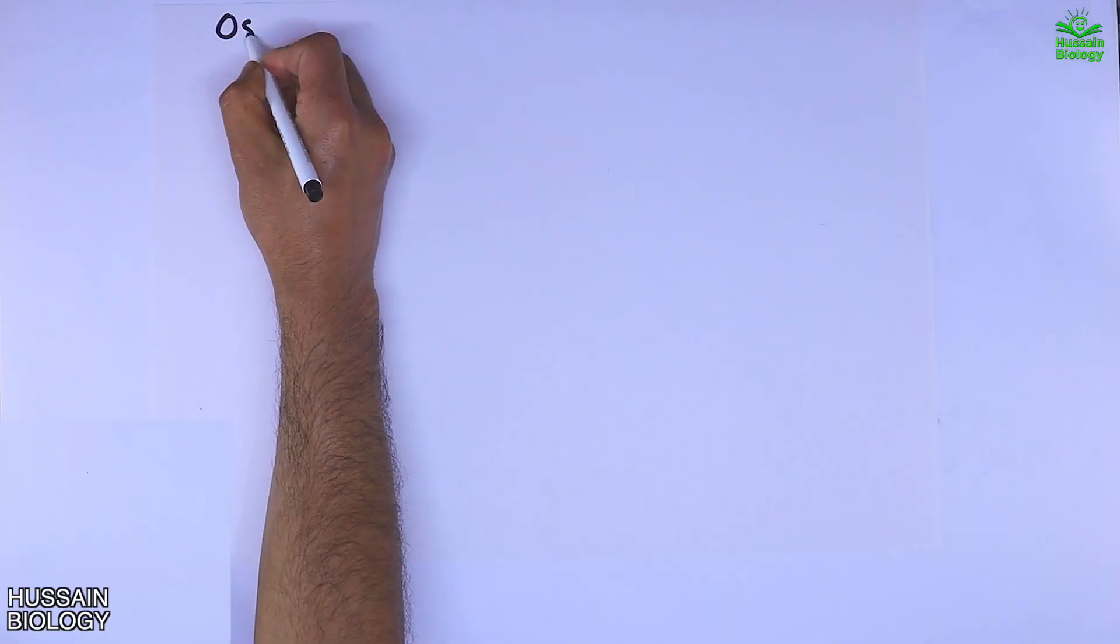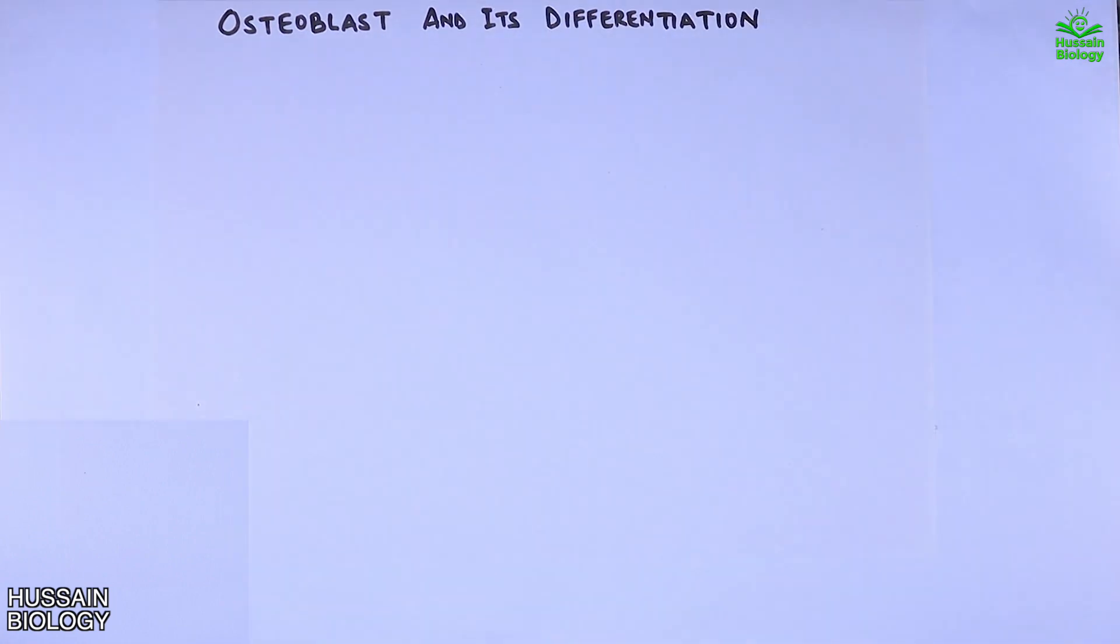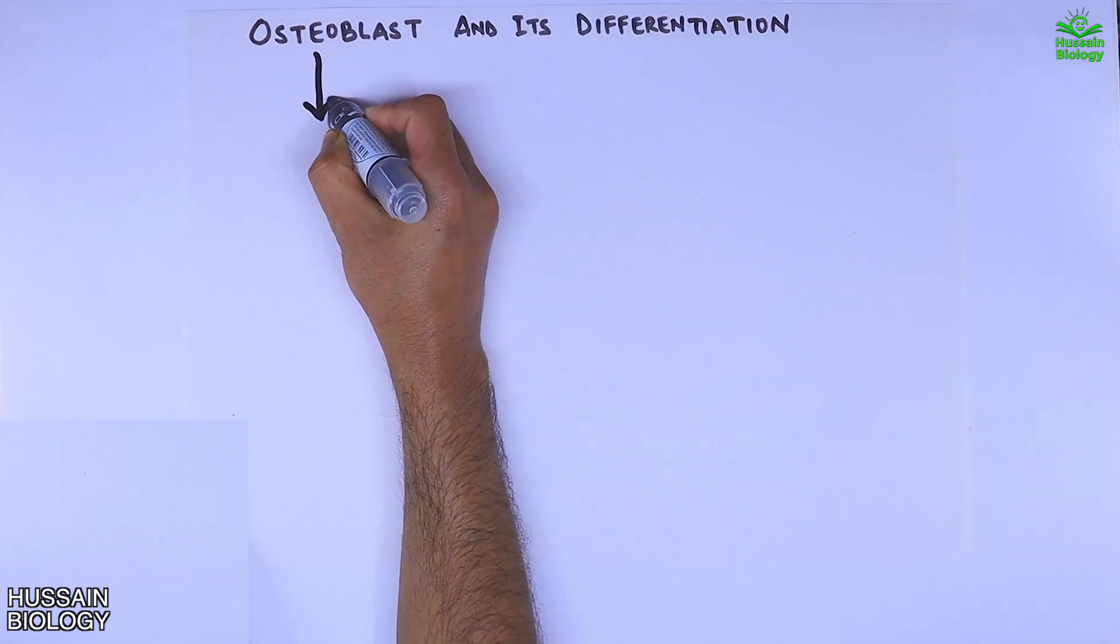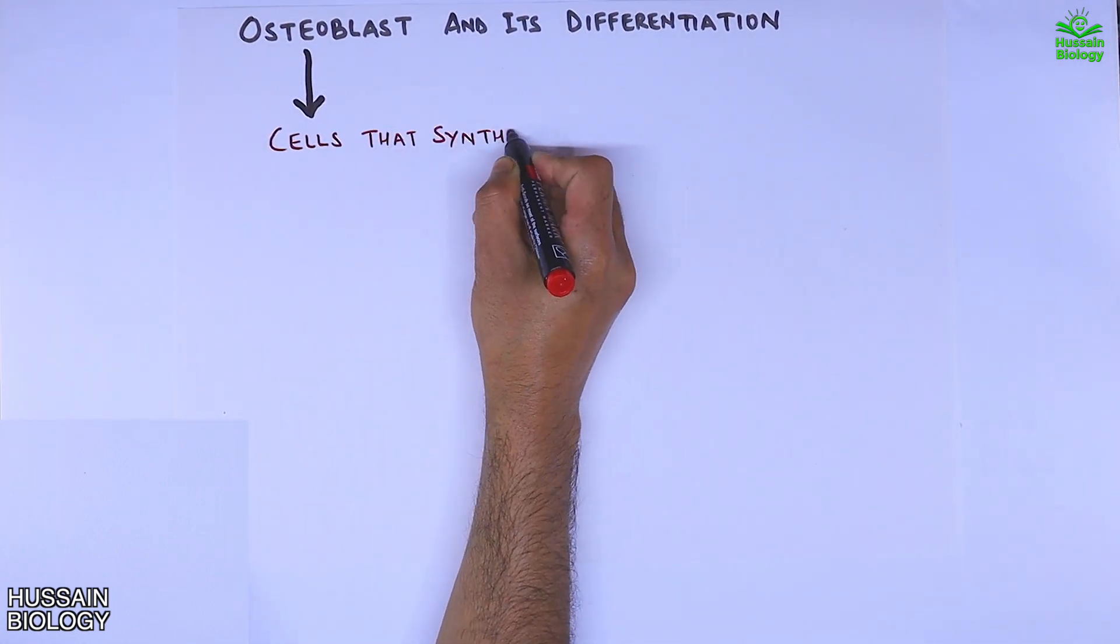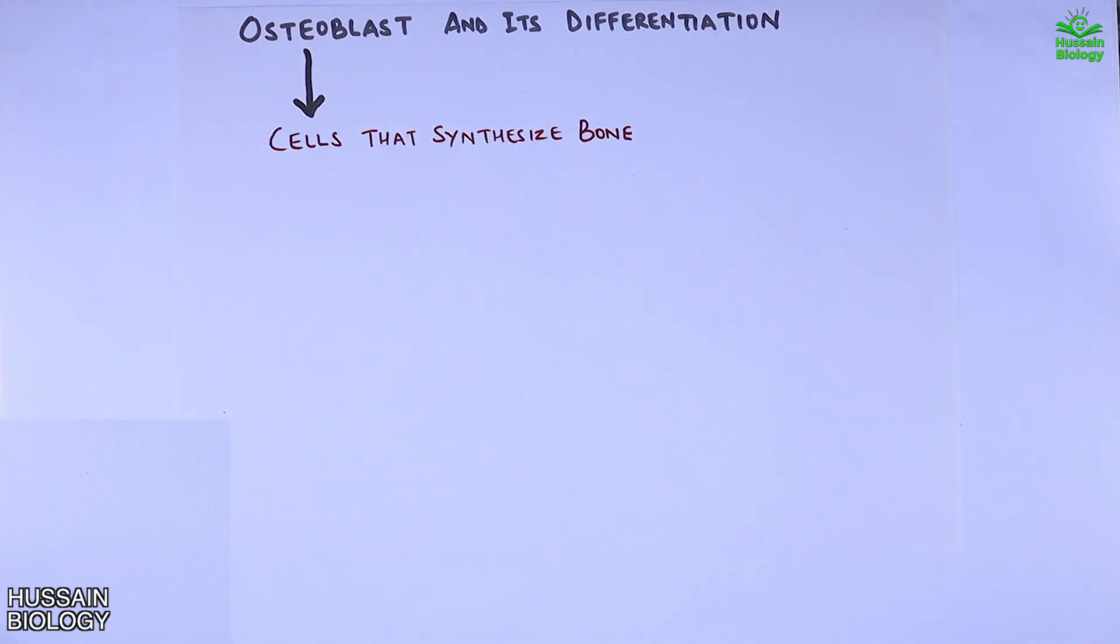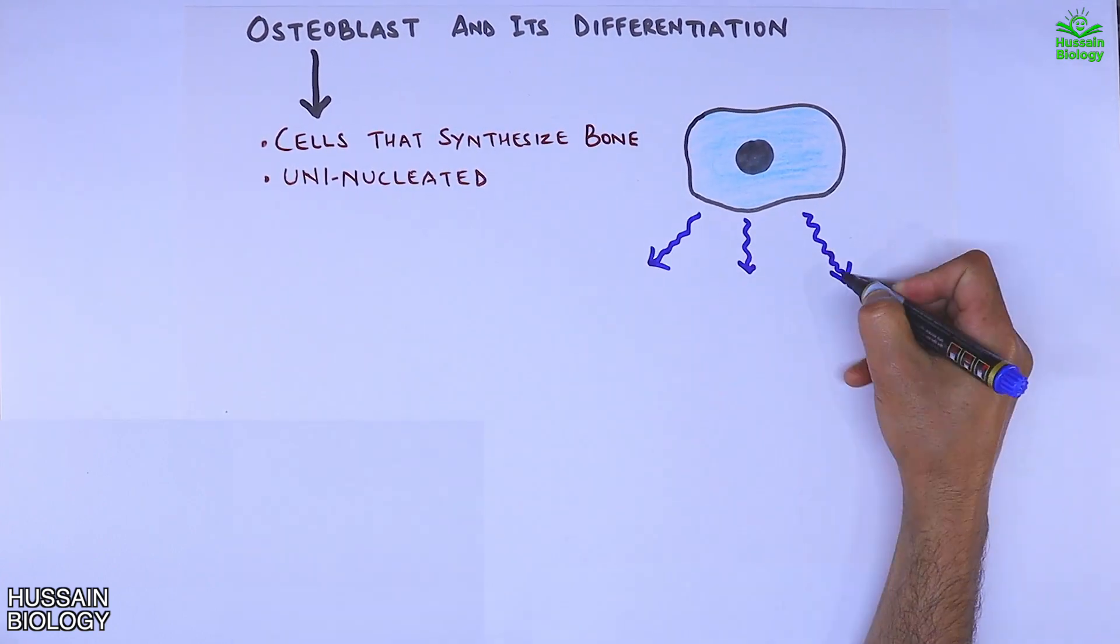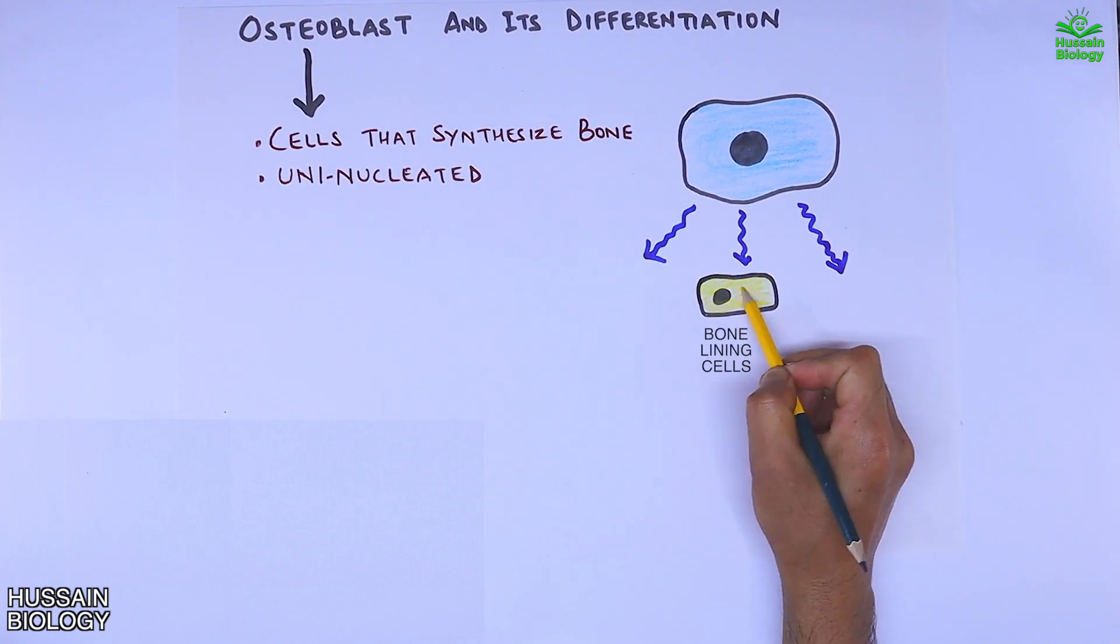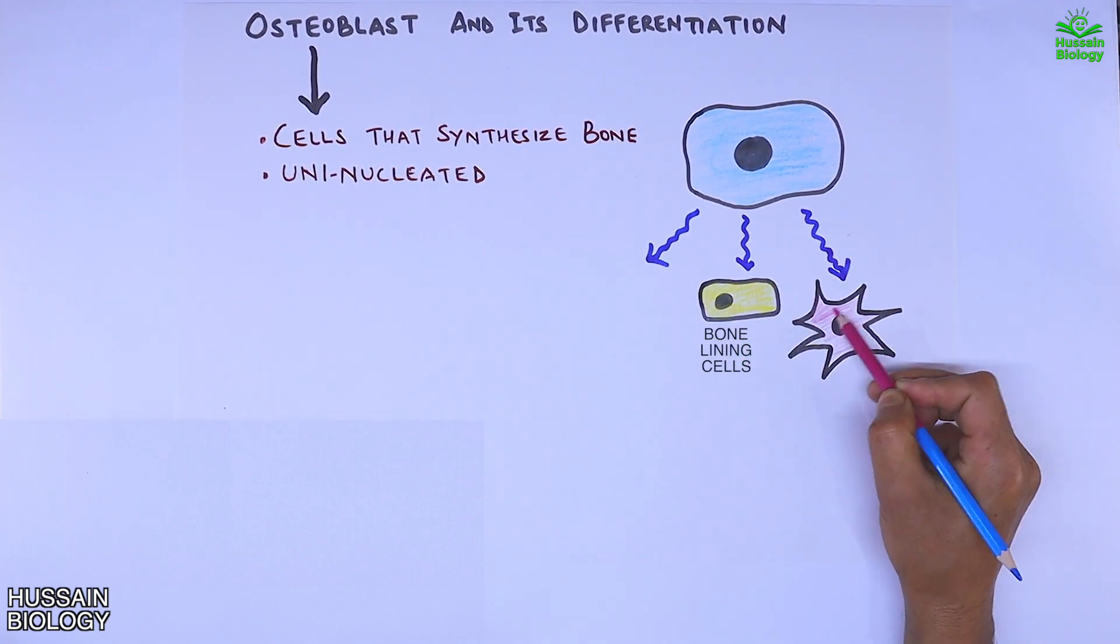In this video we'll be discussing osteoblast and its differentiation. Osteoblasts are cells that synthesize bone tissue. They are uninucleated cells, and when driven to differentiate, we get lining cells or osteocytes that make up the bone tissue.